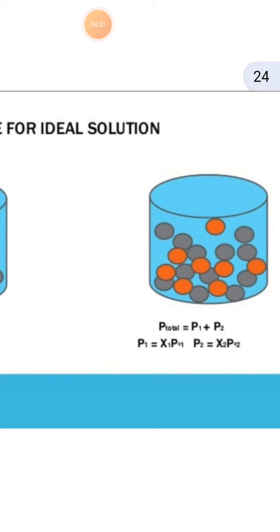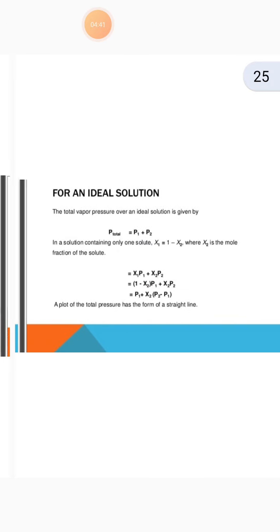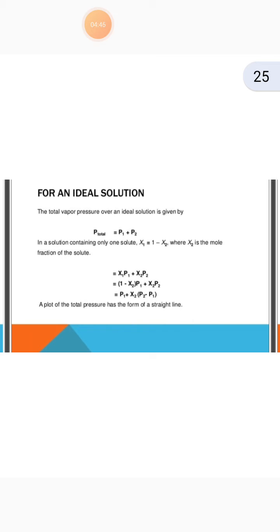When we talk about P1, we have P1 = x1 × P°1, and P2 = x2 × P°2. For an ideal solution, the total vapour pressure is given by P total = P1 + P2. In a solution containing only one solute, x1 = 1 − x2, where x2 is the mole fraction of the solute. This gives P total = P°1 + x2(P°2 − P°1). A plot of the total pressure has the form of a straight line.